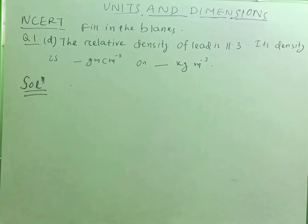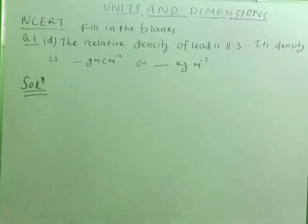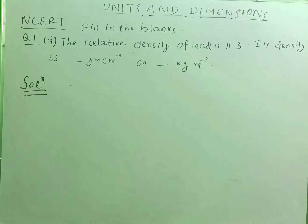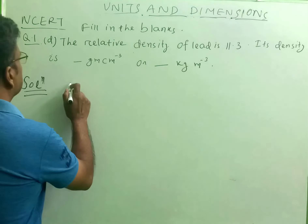Students, the next question is question number 1D. The relative density of lead is 11.3. Its density is dash gram per centimeter cube or dash kg per meter cube.